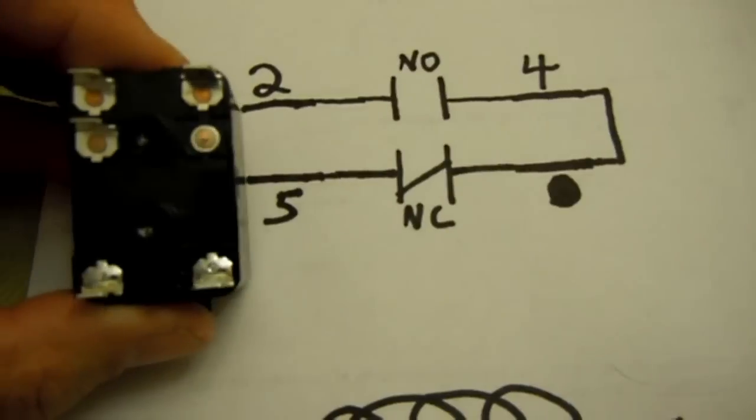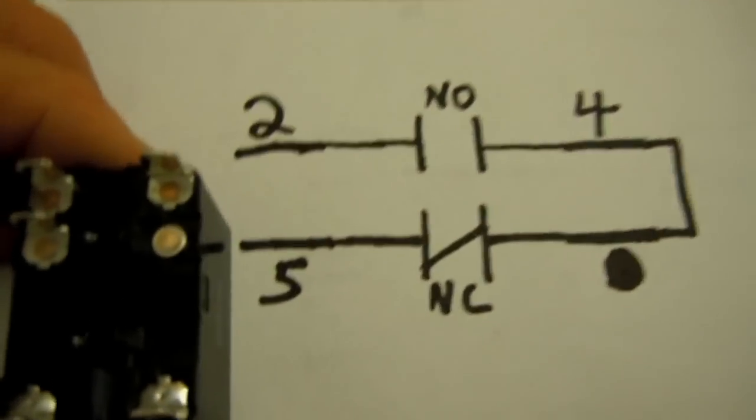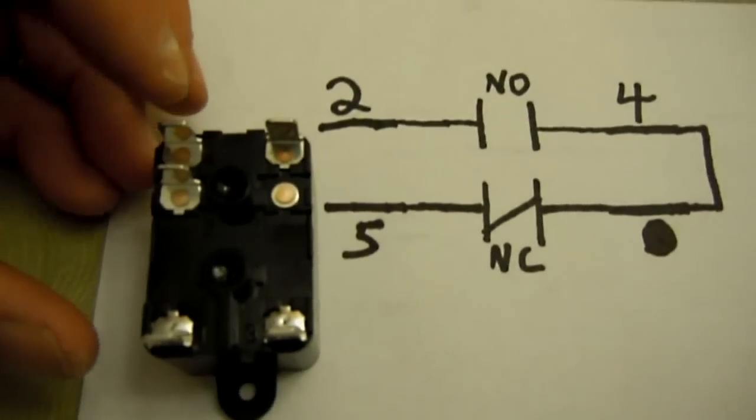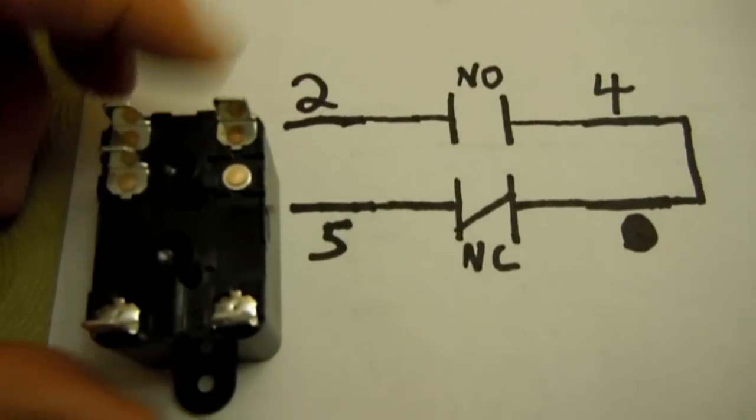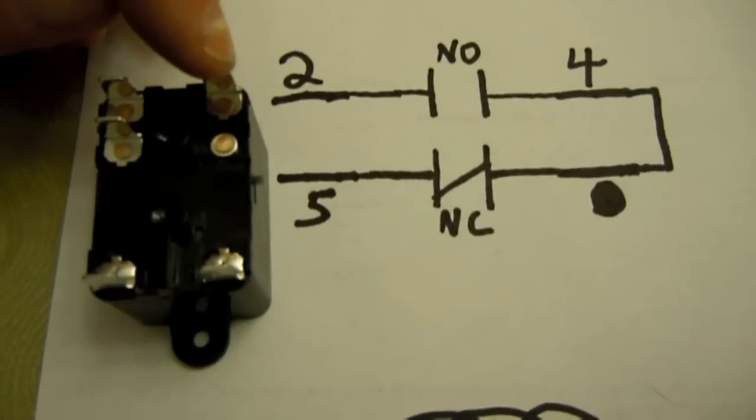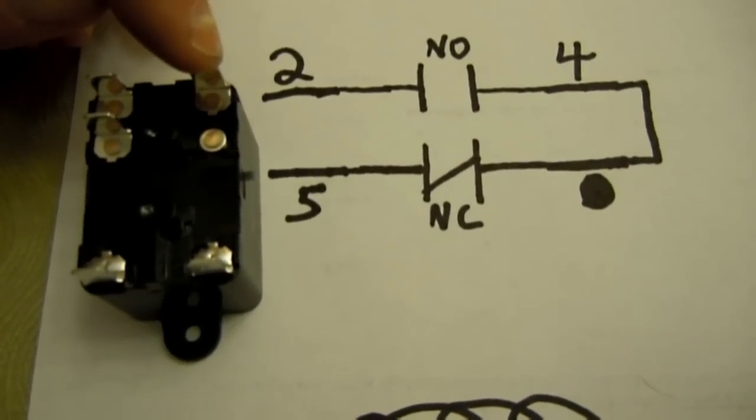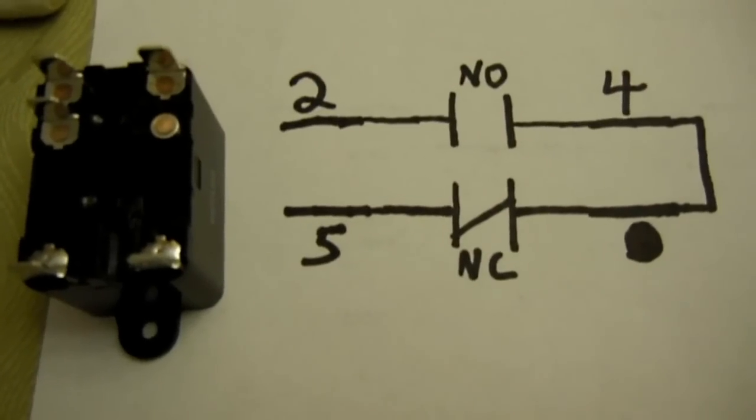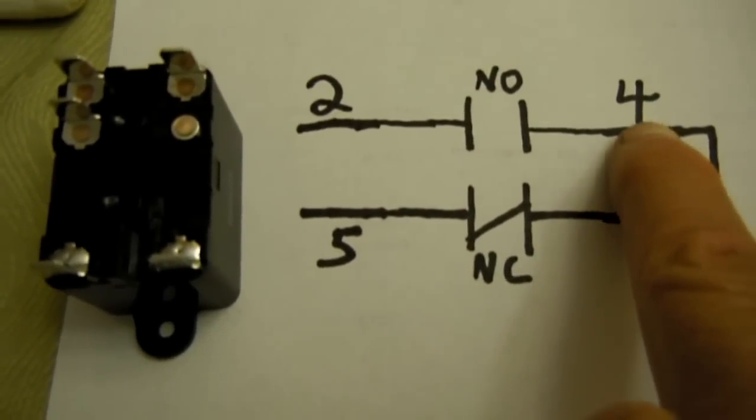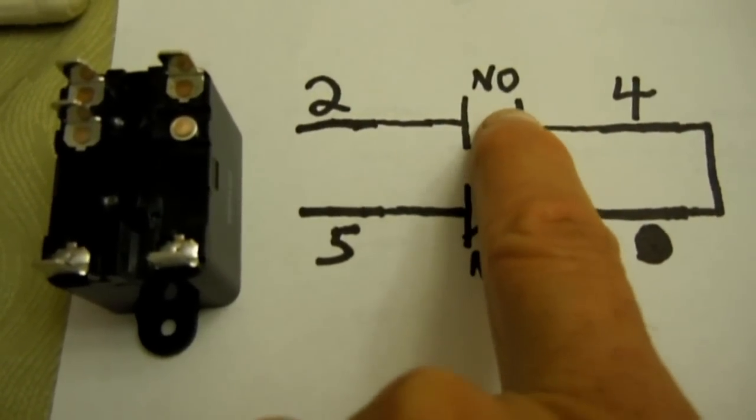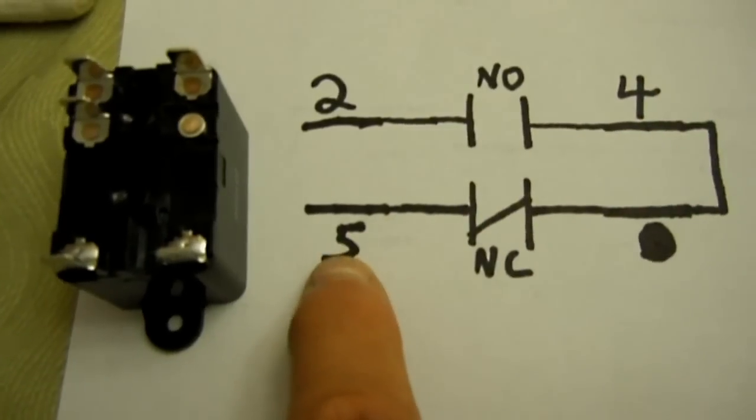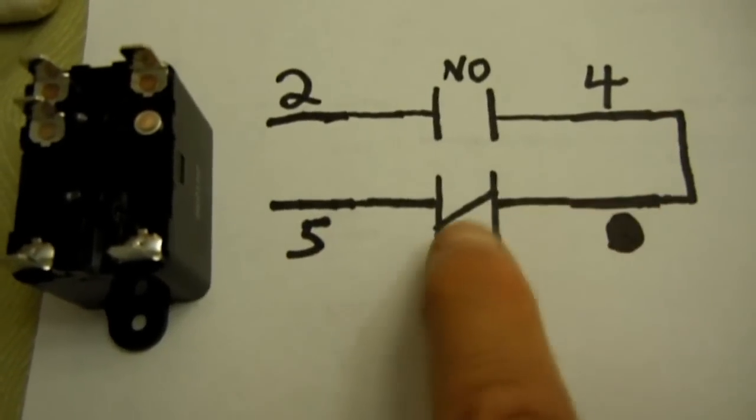If you take note on this relay, there's really only five pins. Number four pin is where you would connect your power coming in that you want switched. So when this relay energizes, two and four close, and five and four open.